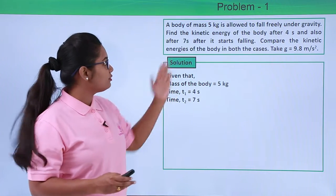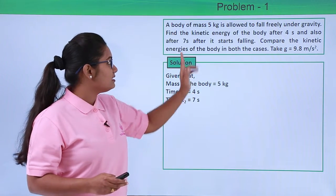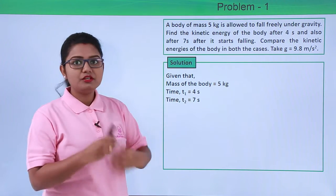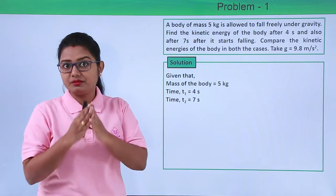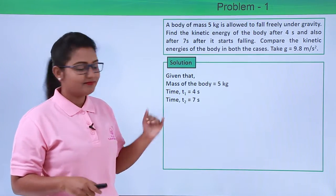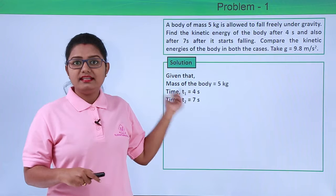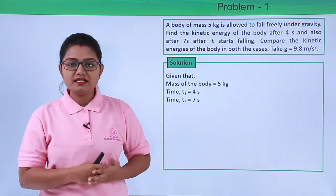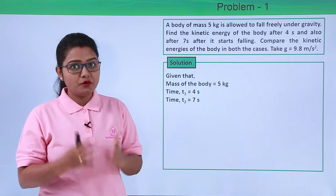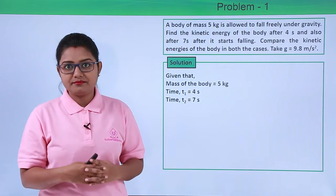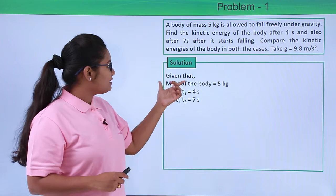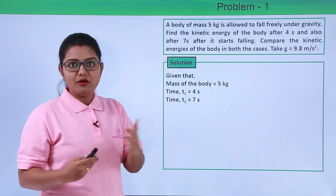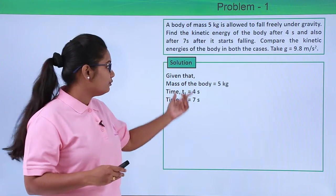We have taken 4 seconds as time T1 and 7 seconds as T2. At the end of those timings we need to find the kinetic energy of the body. To calculate kinetic energy we need two things: the mass of the body and the velocity of the body at that particular instant. We have the mass, but we do not have the velocity in these two cases.